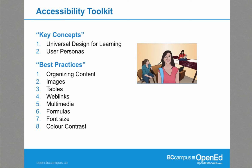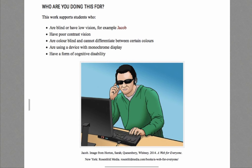The accessibility toolkit starts off with key concepts — what it means to work within the concept of Universal Design for Learning. Then we created user personas. We took each type of disability often seen in disability services and created a user persona: naming that person, describing their background, and what issues they may encounter. The best practices section covers organizing content, images, tables, web links, multimedia, formulas, font size, and color contrast.